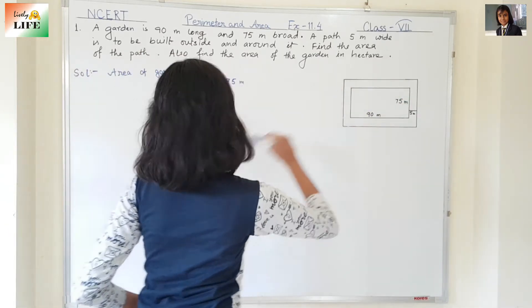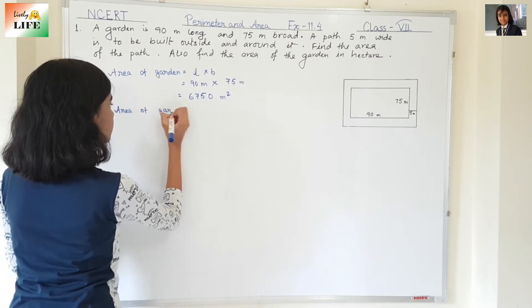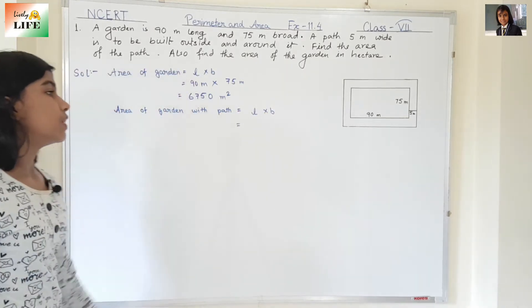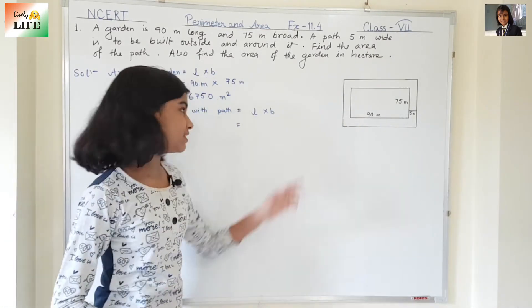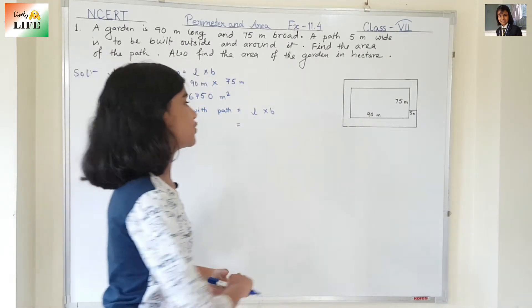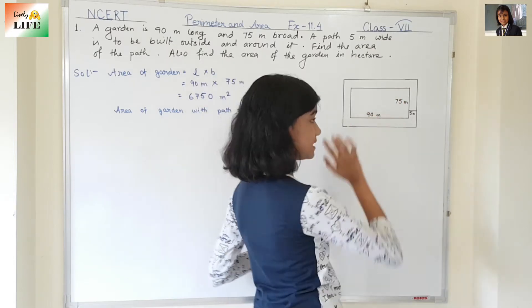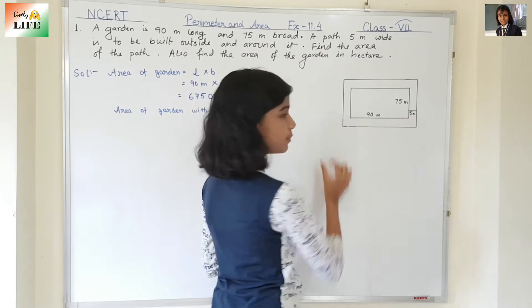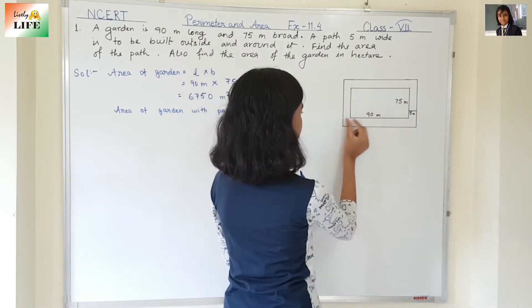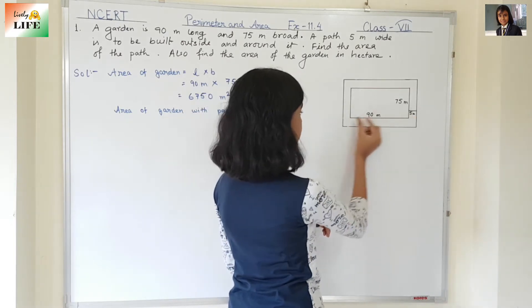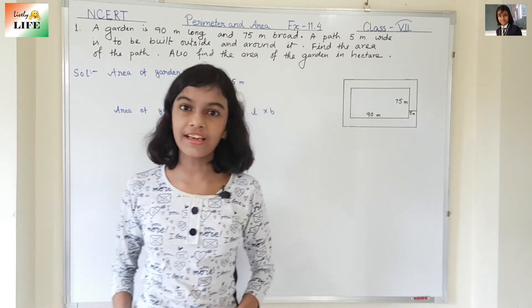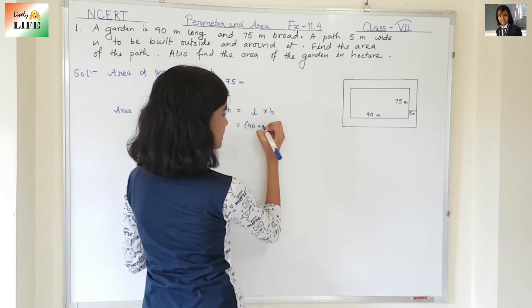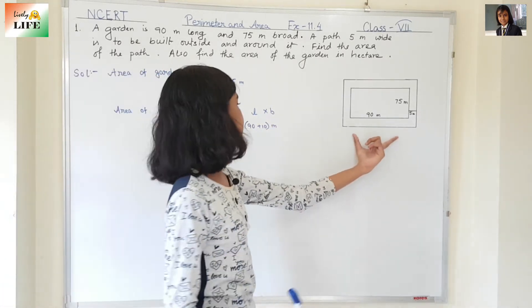Now the area of the garden with path means the bigger rectangle — length into breadth. We don't know the length and the breadth of the bigger rectangle. The length of the small garden rectangle is 90 meter, and the path is 5 meter wide on each side. So 5 meter and 5 meter — everywhere it is 5 meter. So 90 plus 5 plus 5: 5 plus 5 is 10, so 90 plus 10 meter will be the length of the bigger rectangle.